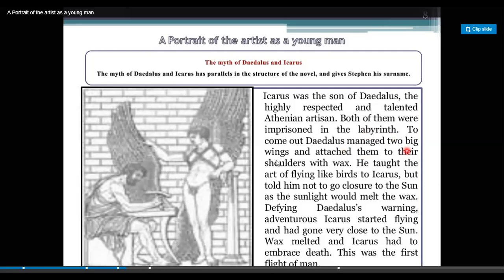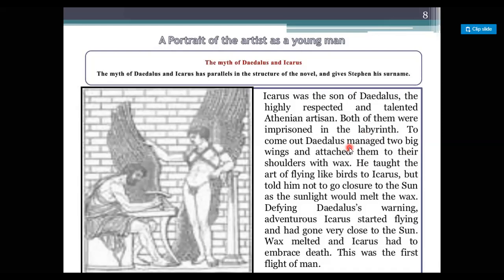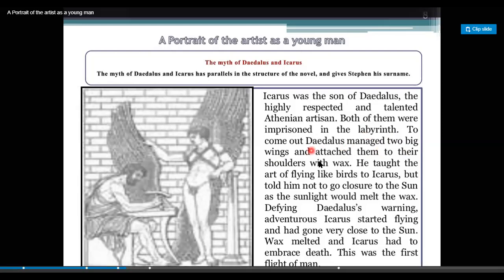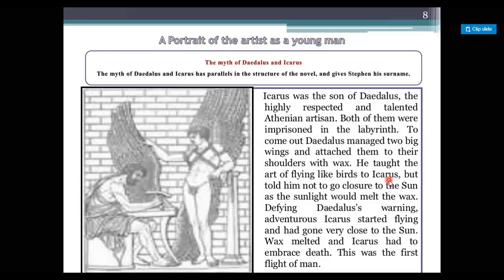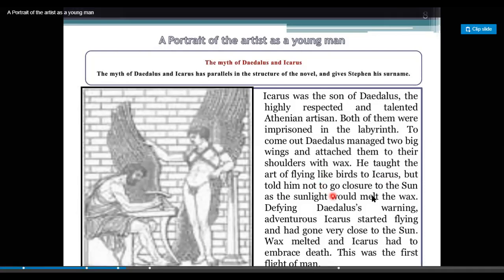To come out of the maze, Daedalus managed two big wings and attached them to their shoulders with wax. He taught the art of flying like birds to Icarus. But he told Icarus not to go closer to the sun, as sunlight would melt the wax.